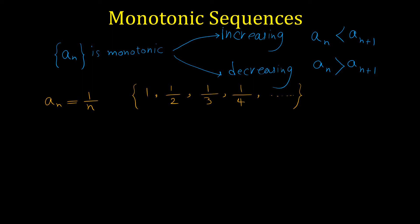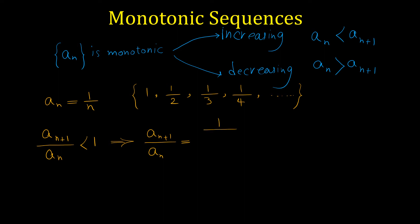One method to prove that a sequence is decreasing is to show that the ratio a_{n+1} over a_n is less than 1. If this ratio is less than 1, the sequence is decreasing, and if the ratio is greater than 1, the sequence is increasing. This method works only for sequences whose terms are positive. So to prove that 1/n is decreasing, we compute this ratio: a_{n+1} is 1 over n+1, and a_n is 1 over n.